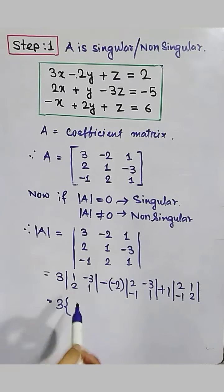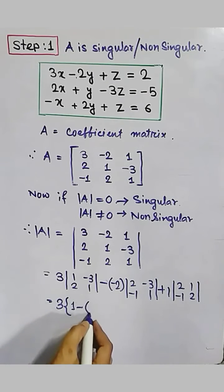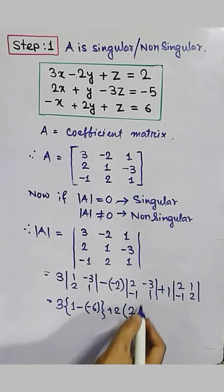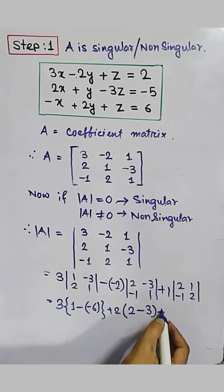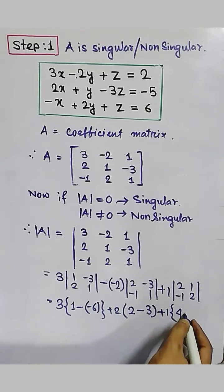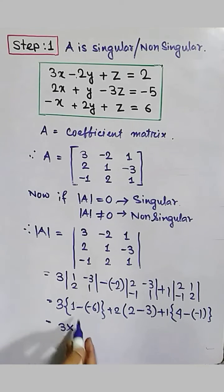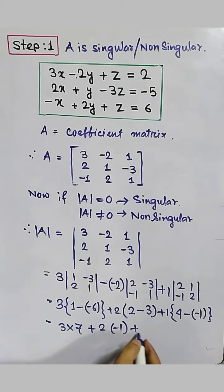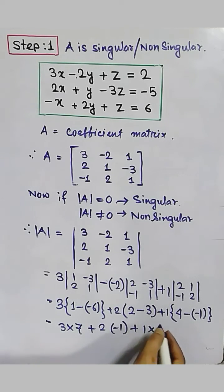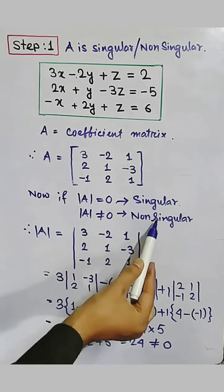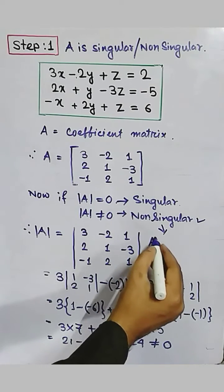Finding the values: 1 times 1 equals 1, minus (minus 3 times 2) equals plus 6, giving 7. Then plus 2 times (2 times 1 minus (minus 3 times minus 1)), giving 2 into (2 minus 3) equals minus 1. Then 1 into (2 times 2 minus (minus 1 times 1)) giving 5. So 3 times 7 plus 2 times minus 1 plus 1 times 5 equals 21 minus 2 plus 5 equals 24. It is not equal to 0, so A is non-singular and A inverse exists.